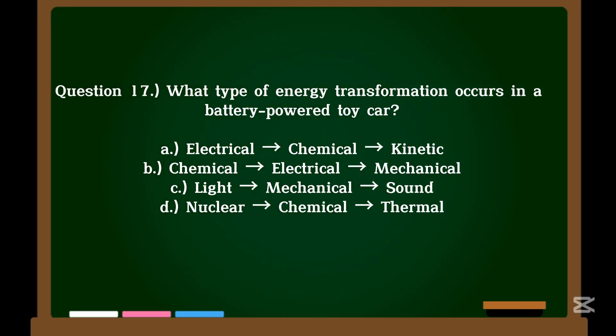Question 17. What type of energy transformation occurs in a battery-powered toy car? A. Electrical → chemical → kinetic. B. Chemical → electrical → mechanical. C. Light → mechanical → sound. D. Nuclear → chemical → thermal.